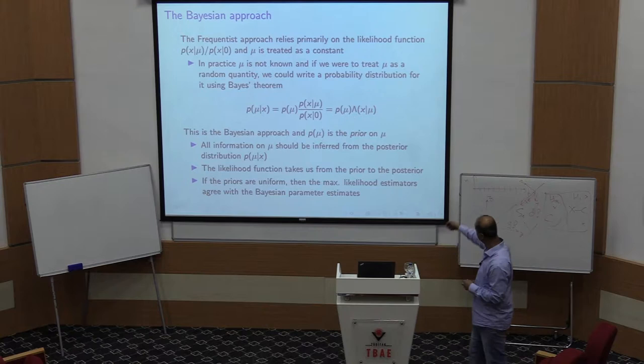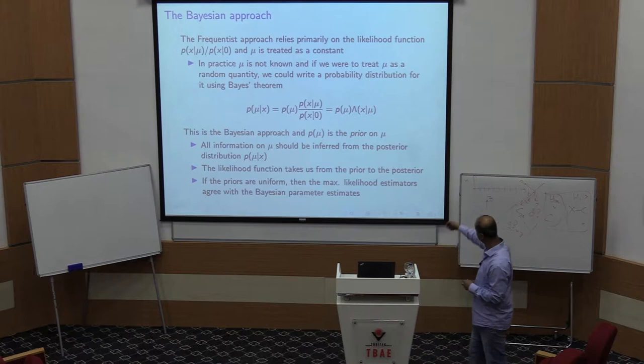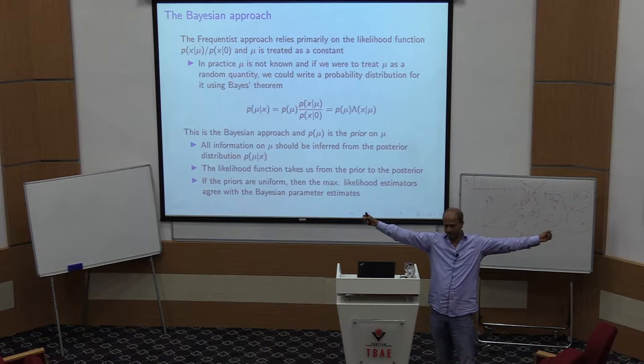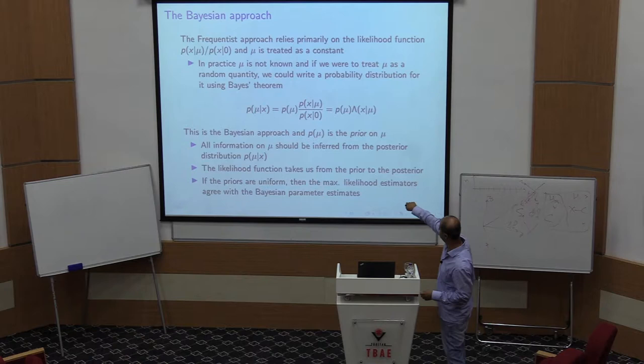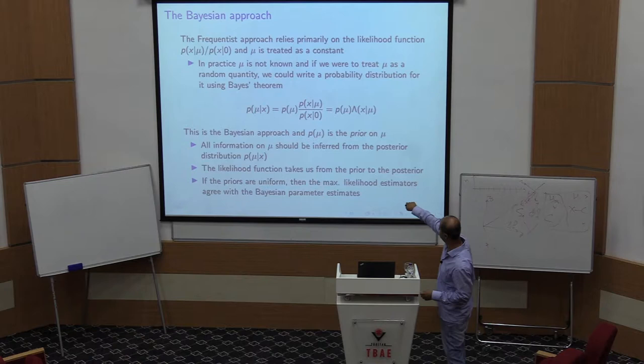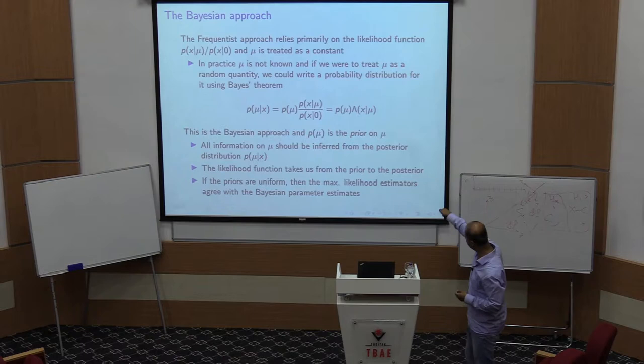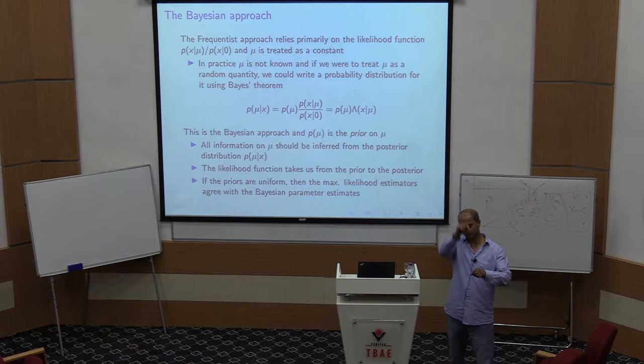If the prior p(mu) is a uniform constant — ignoring normalization — then the posterior is just the likelihood function. In that case, both Bayesian and frequentist approaches only compute the likelihood function and find its maximum to get the best-fit values for the parameters.